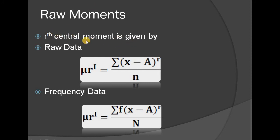The raw moment equation is: mu_r' = sigma(x minus A) all raised to R, divided by N, where A is an arbitrary value — any arbitrary constant. For frequency data: mu_r' = sigma F into (x minus A) all raised to R, divided by capital N.